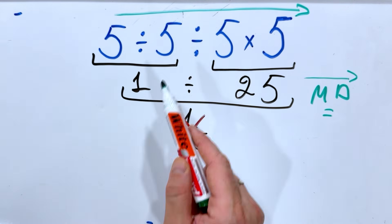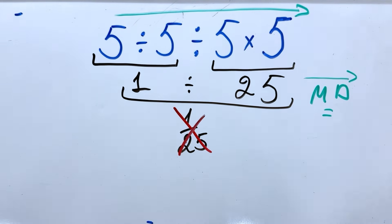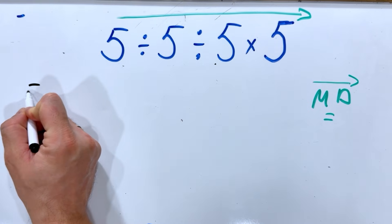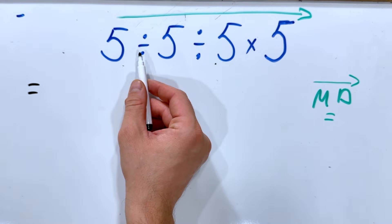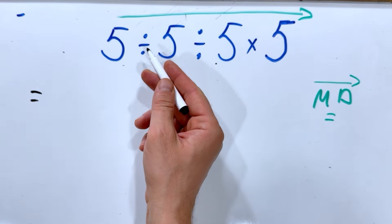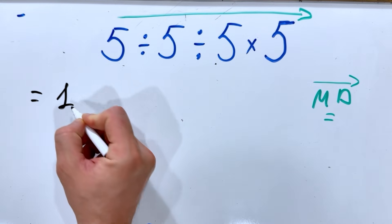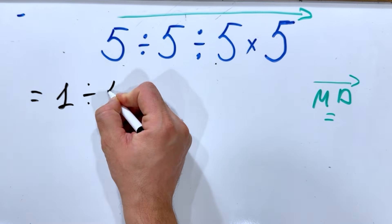This division, then this division, then this division. Therefore, the correct way to solve it is to first do the first division. 5 divided by 5 is 1. Then we have 1 divided by 5.